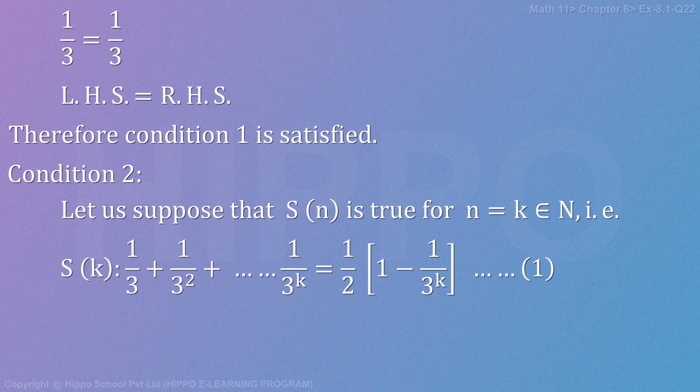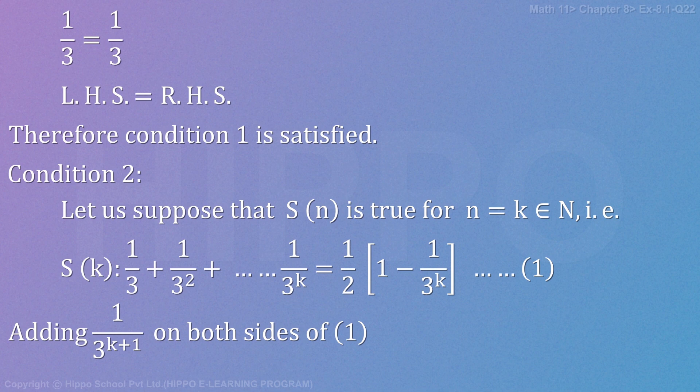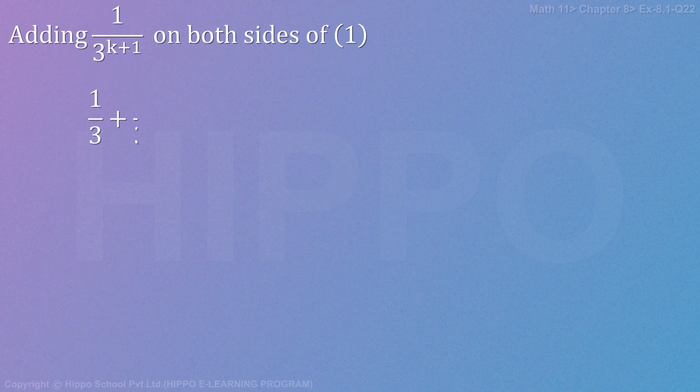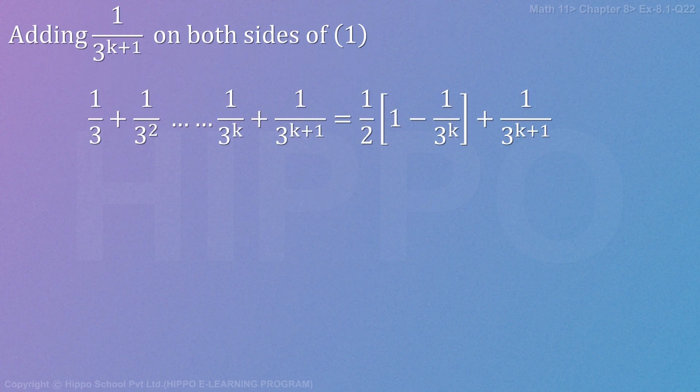Now we place n = k + 1. Adding (1/3)^(k+1) to both sides of equation 1: 1/3 + 1/3² + ... + (1/3)ᵏ + (1/3)^(k+1) = (1/2)[1 - (1/3)ᵏ] + (1/3)^(k+1).